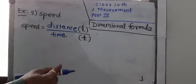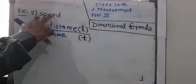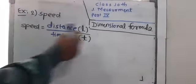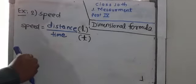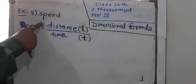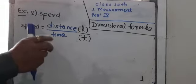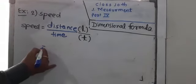Now let's see the second example: speed. We have to write the dimensional formula for speed. How to write it? To write the dimensional formula for any physical quantity, we must be familiar with its formula.